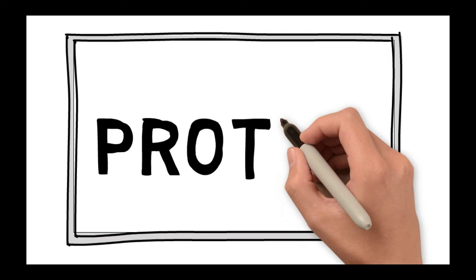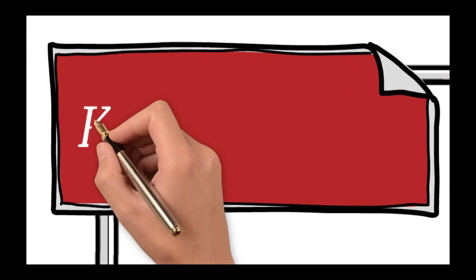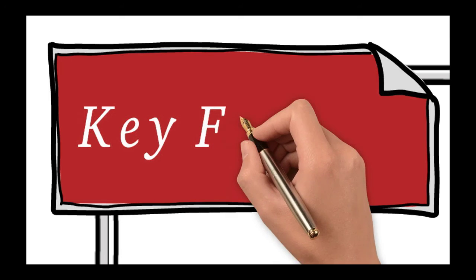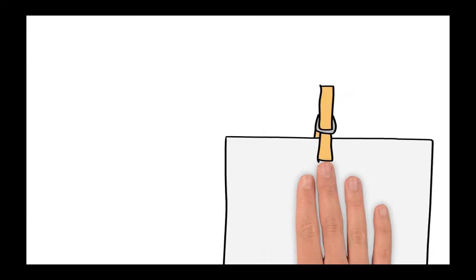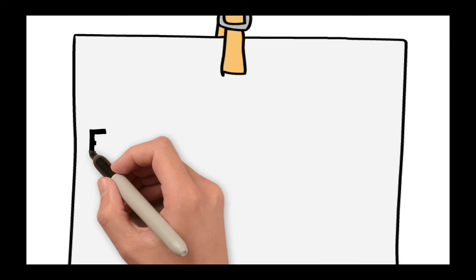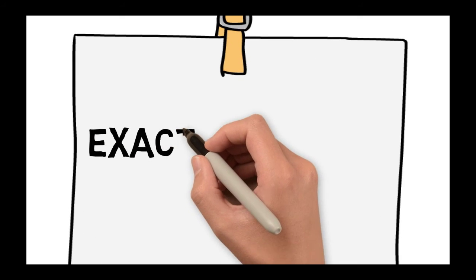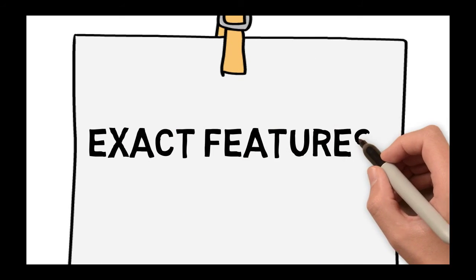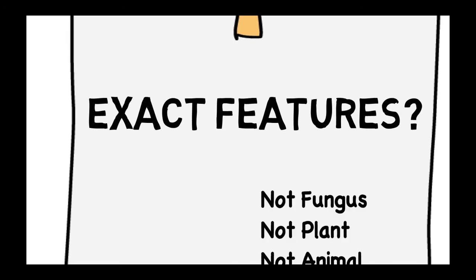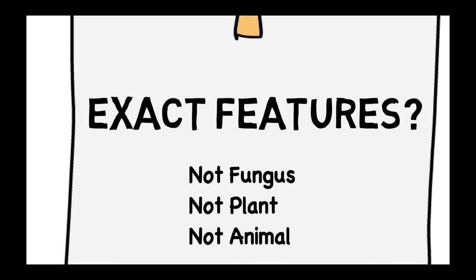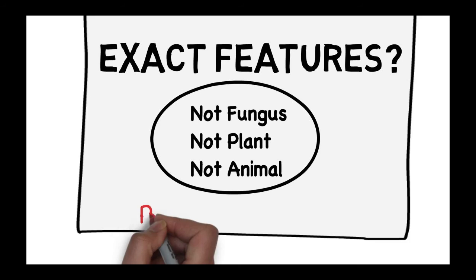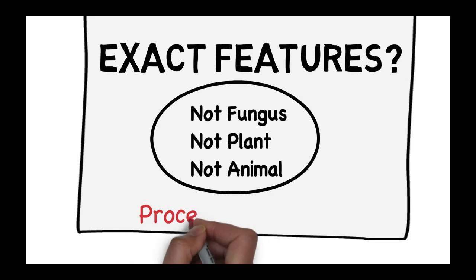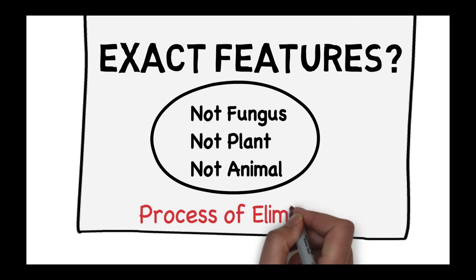Next is the protist kingdom, and again we need to list key features. The protist kingdom is unusual because there is no exact list of features — we simply know that the organisms are eukaryotic, but they're not a fungus, not a plant, and not an animal. So we use a process of elimination in classifying protists.